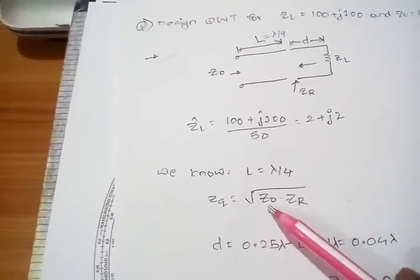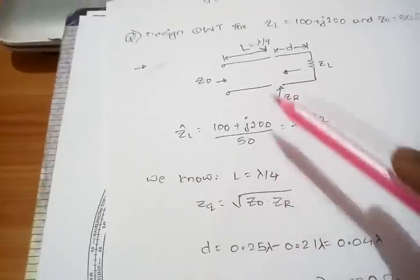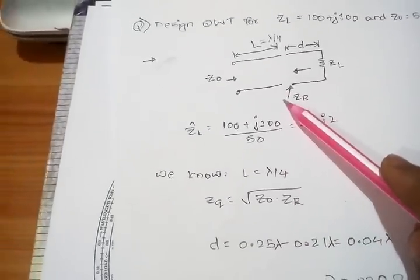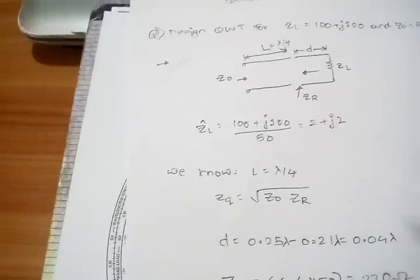It is given by Z0 into Zr. I need to find the value of Zr. How should I find out?